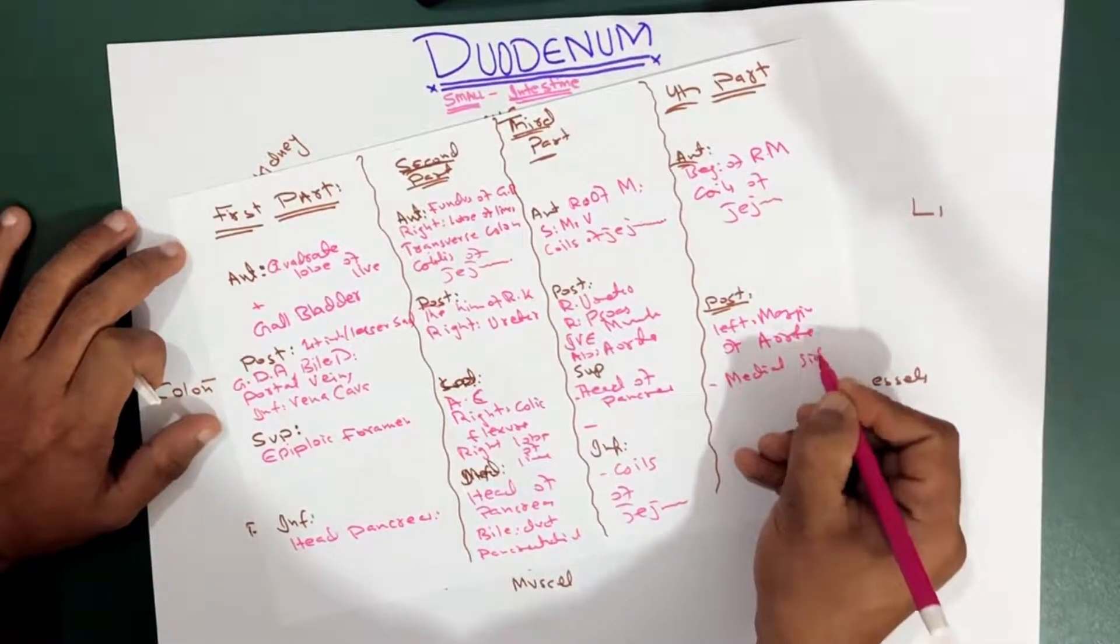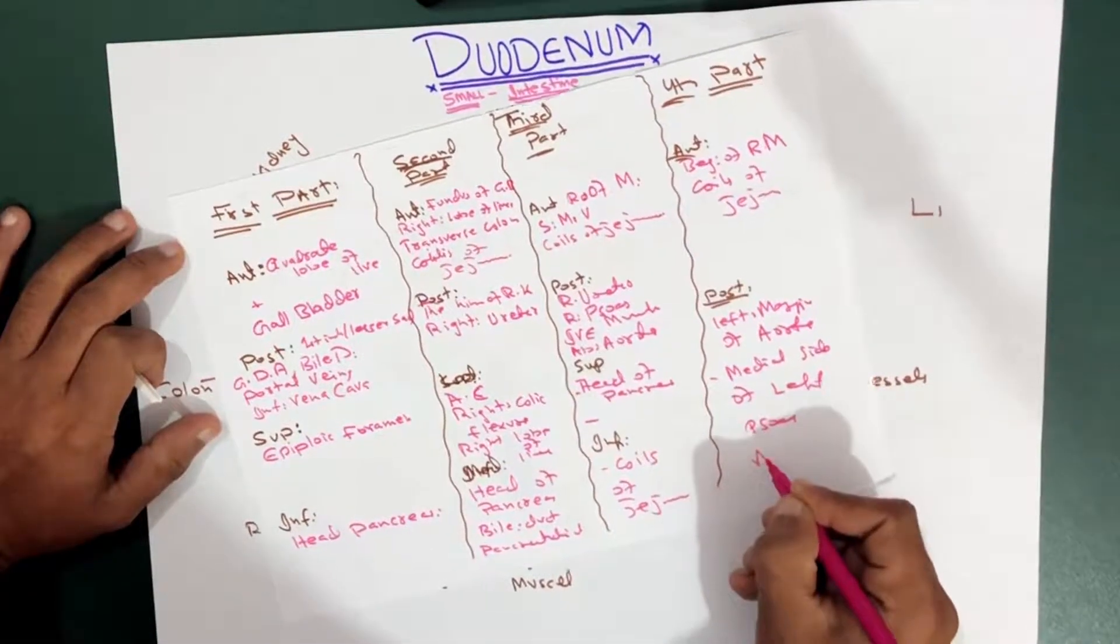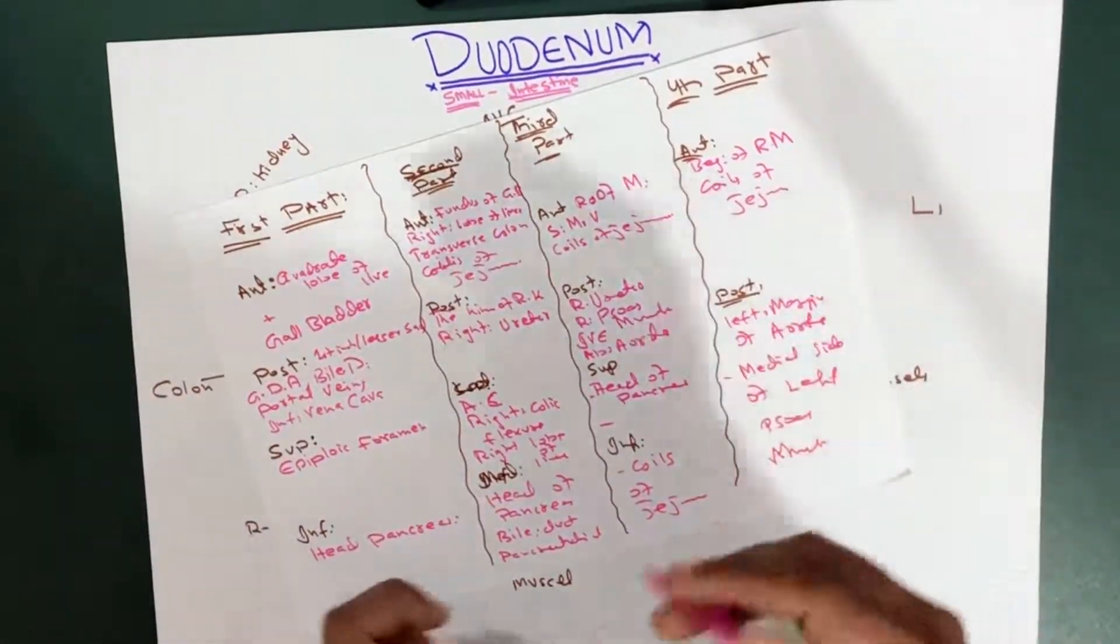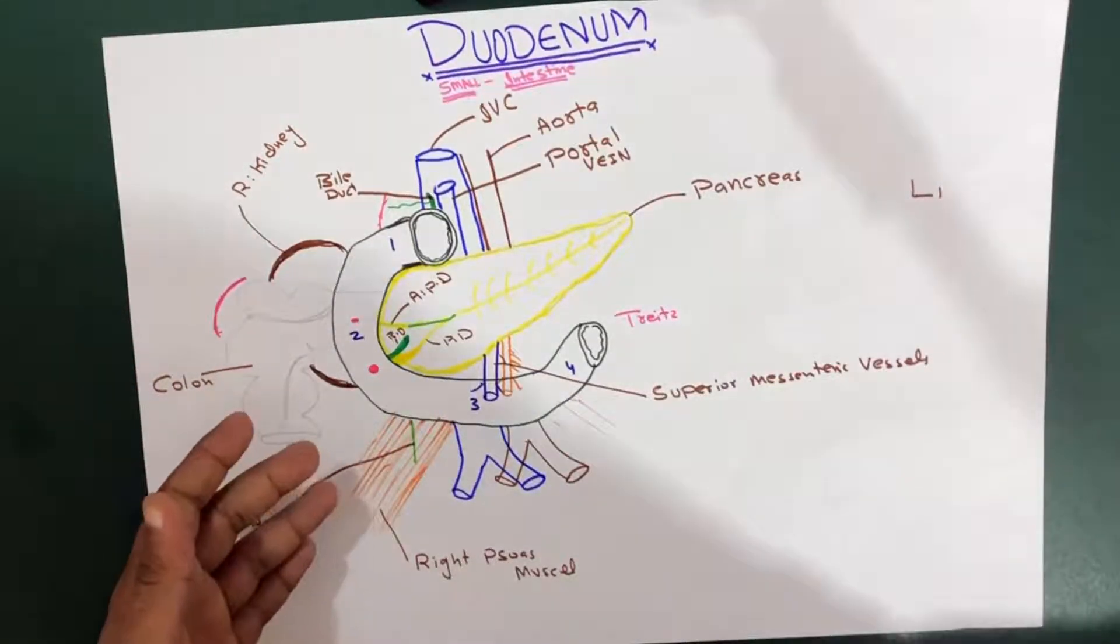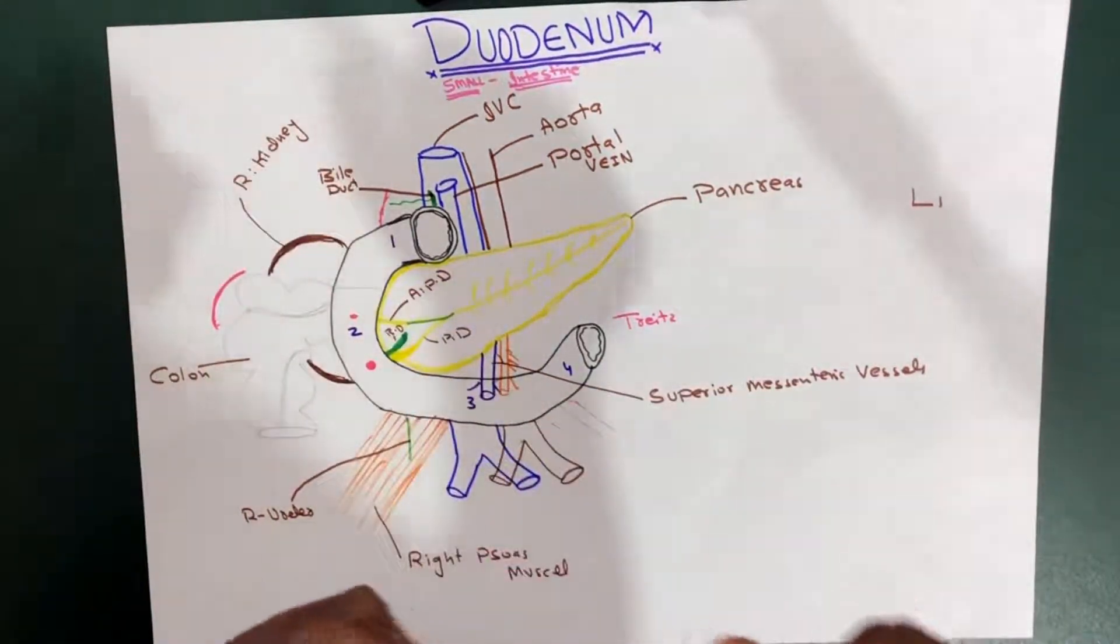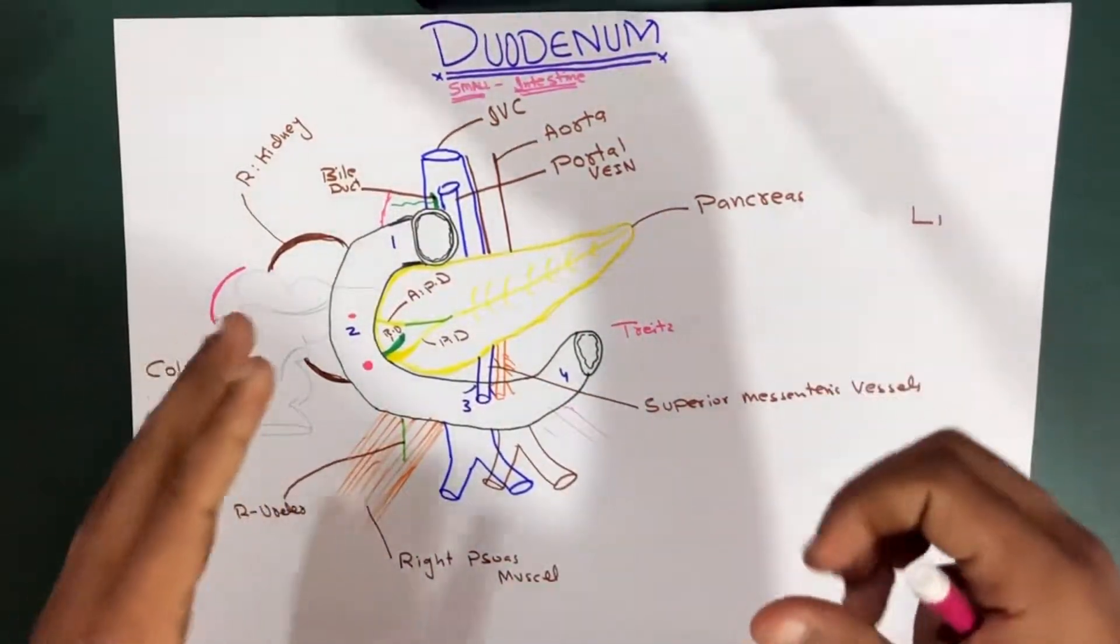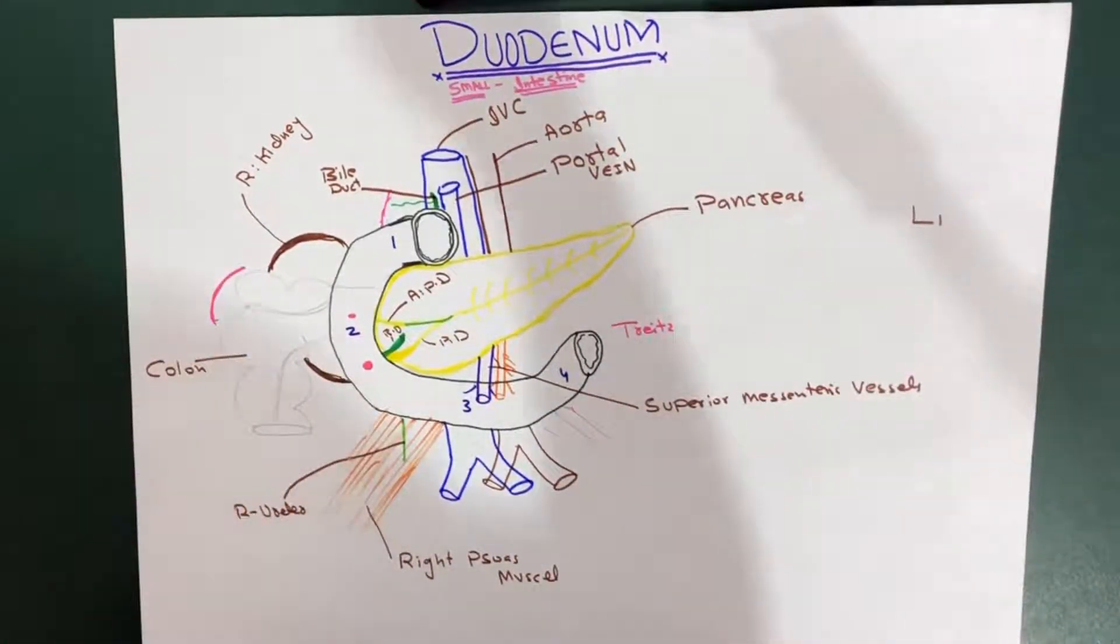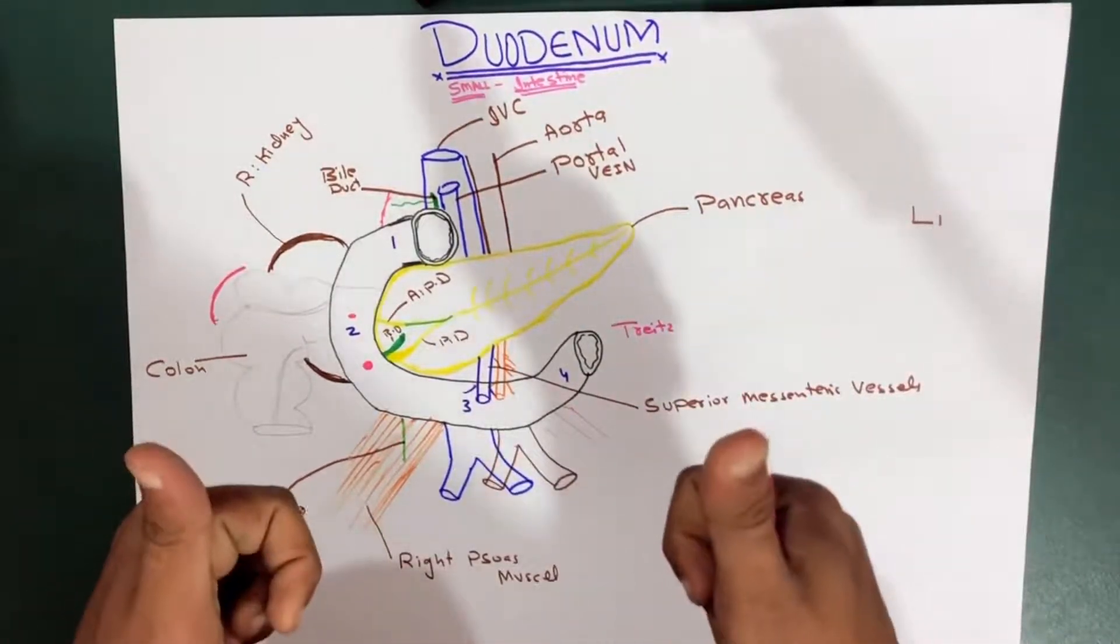So this is the relation of the fourth part of the duodenum to different structures surrounding it. That's it regarding the fourth part of the duodenum. I have to make another detailed video putting the whole concept together, and I'll explain that in the second part of this lecture. So keep visiting and I'll explain that in another video. See you for the next one.